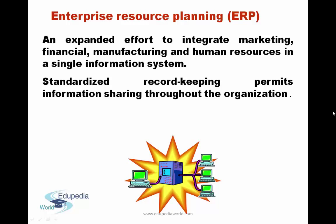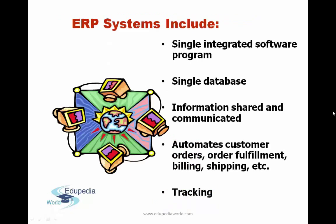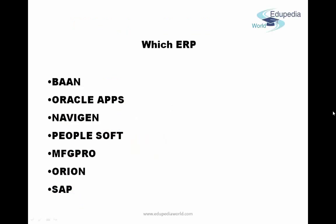Enterprise resource planning is defined as an expanded effort to integrate marketing, financial, manufacturing, and human resources into a single information system. ERP includes a single integrated software program, a single database, information shared across all departments, and automates customer orders, order fulfillment, billing, shipping, and tracking of all tasks.